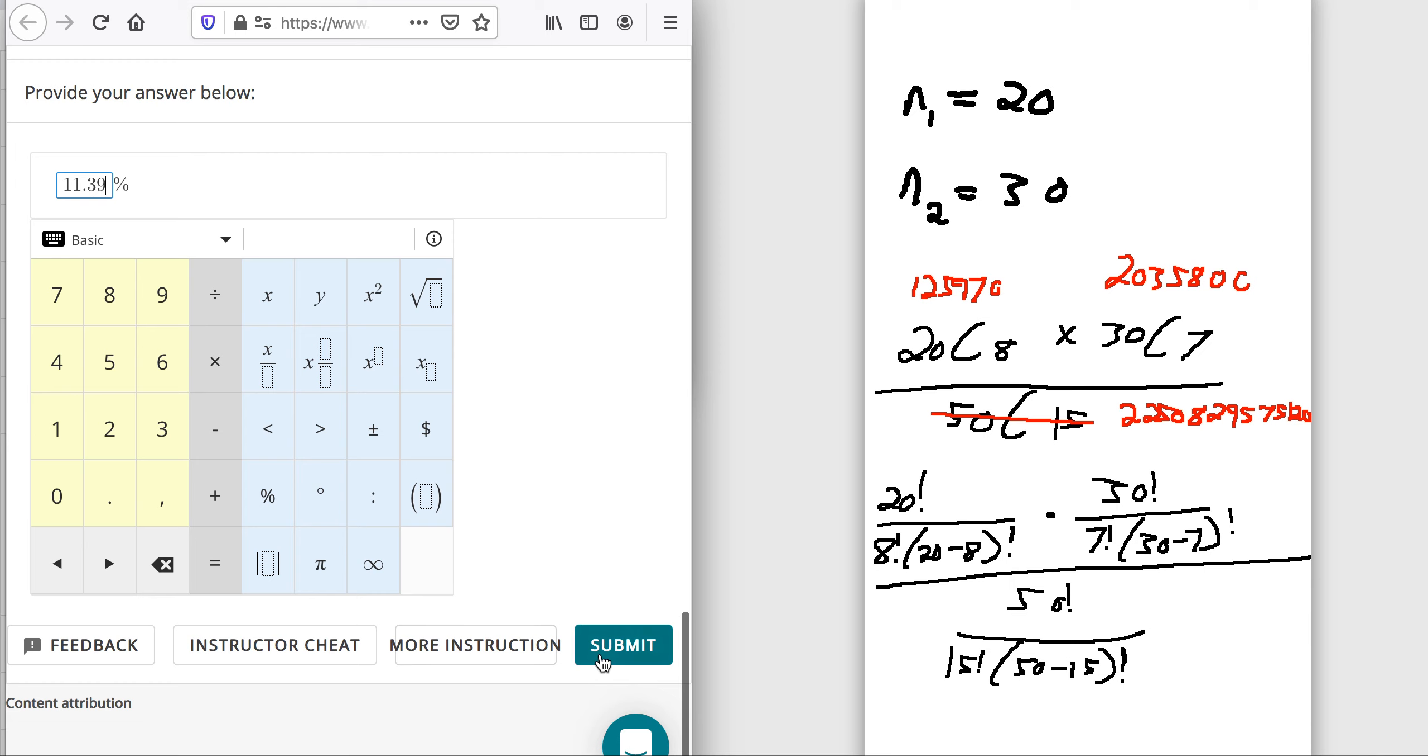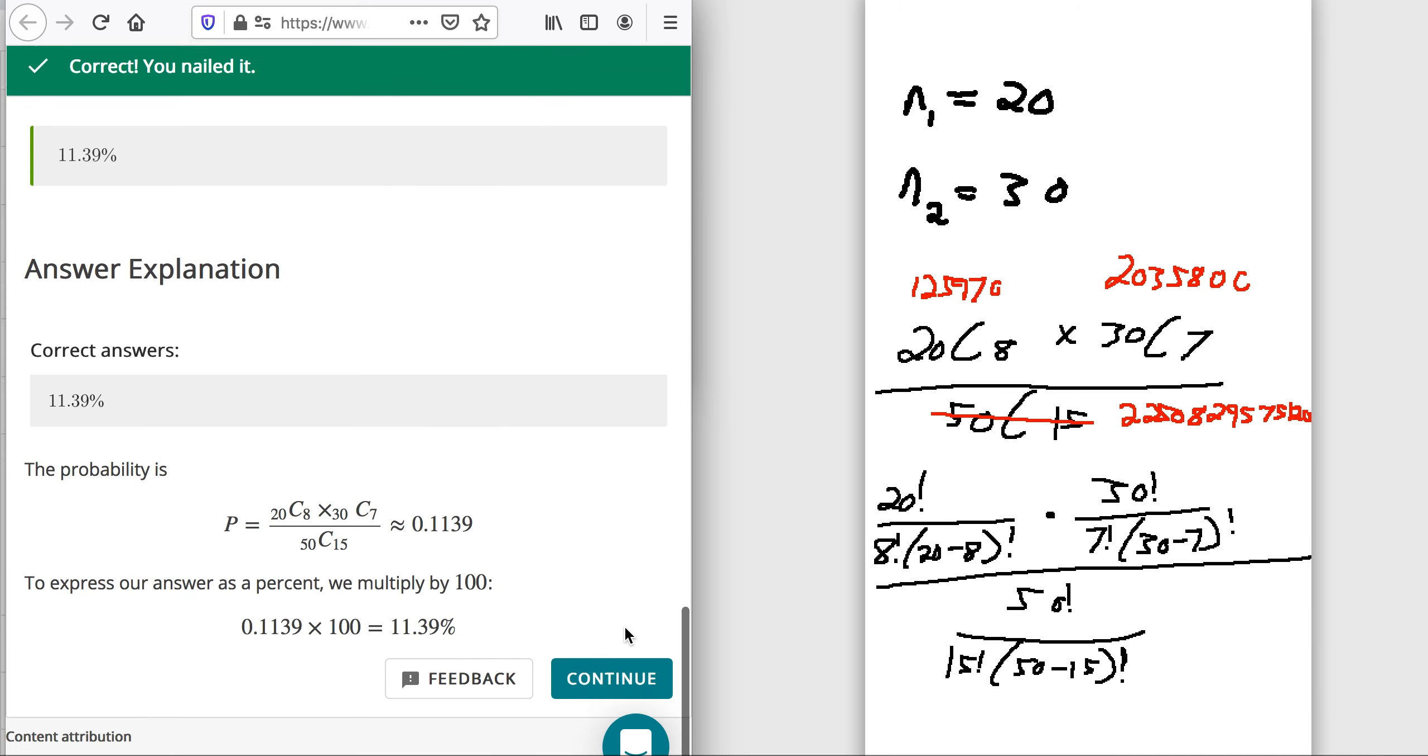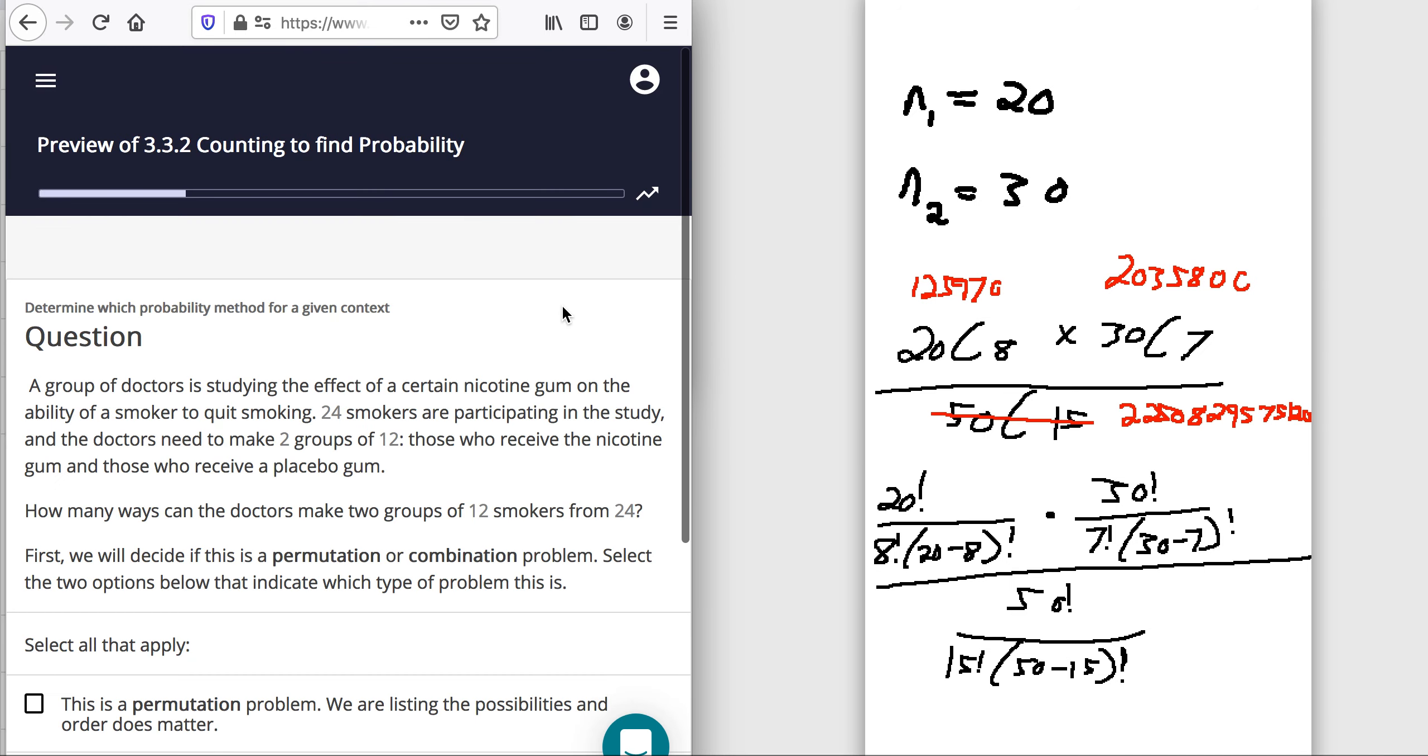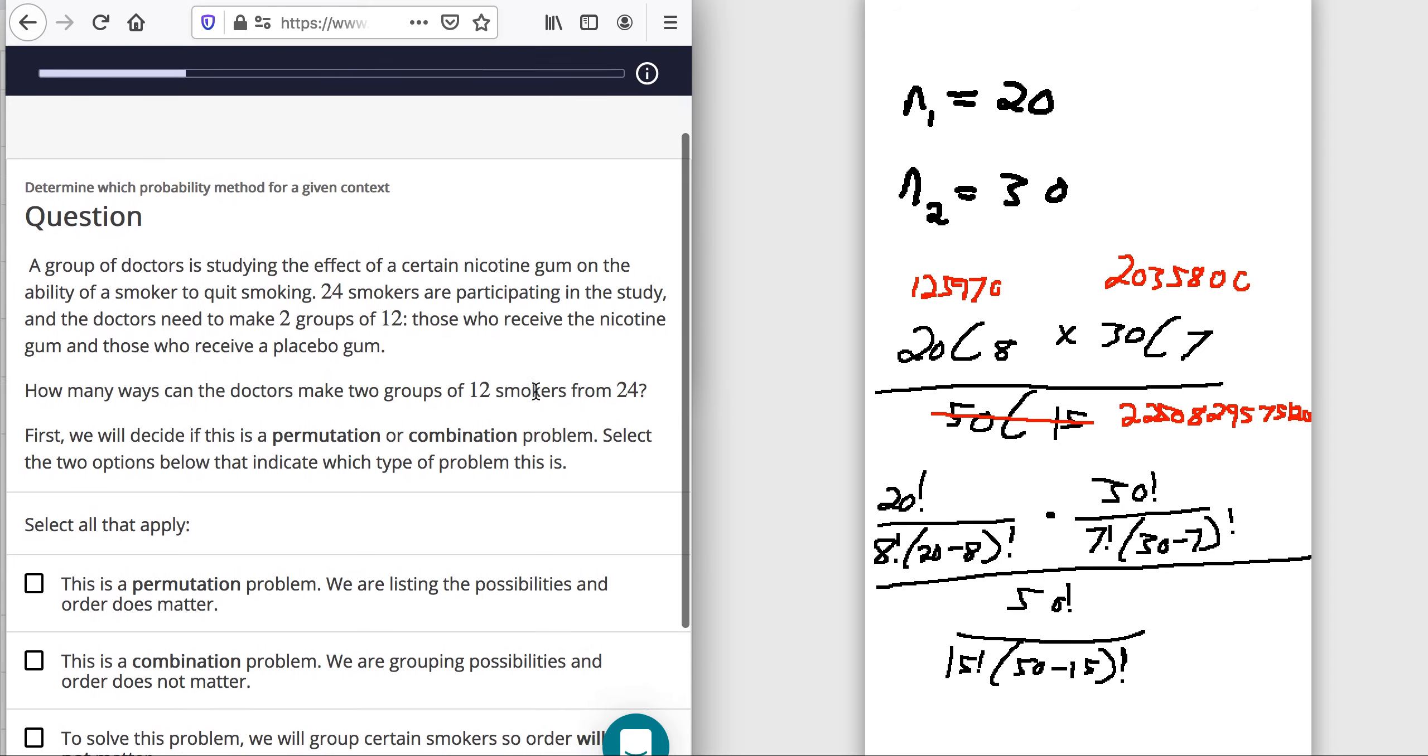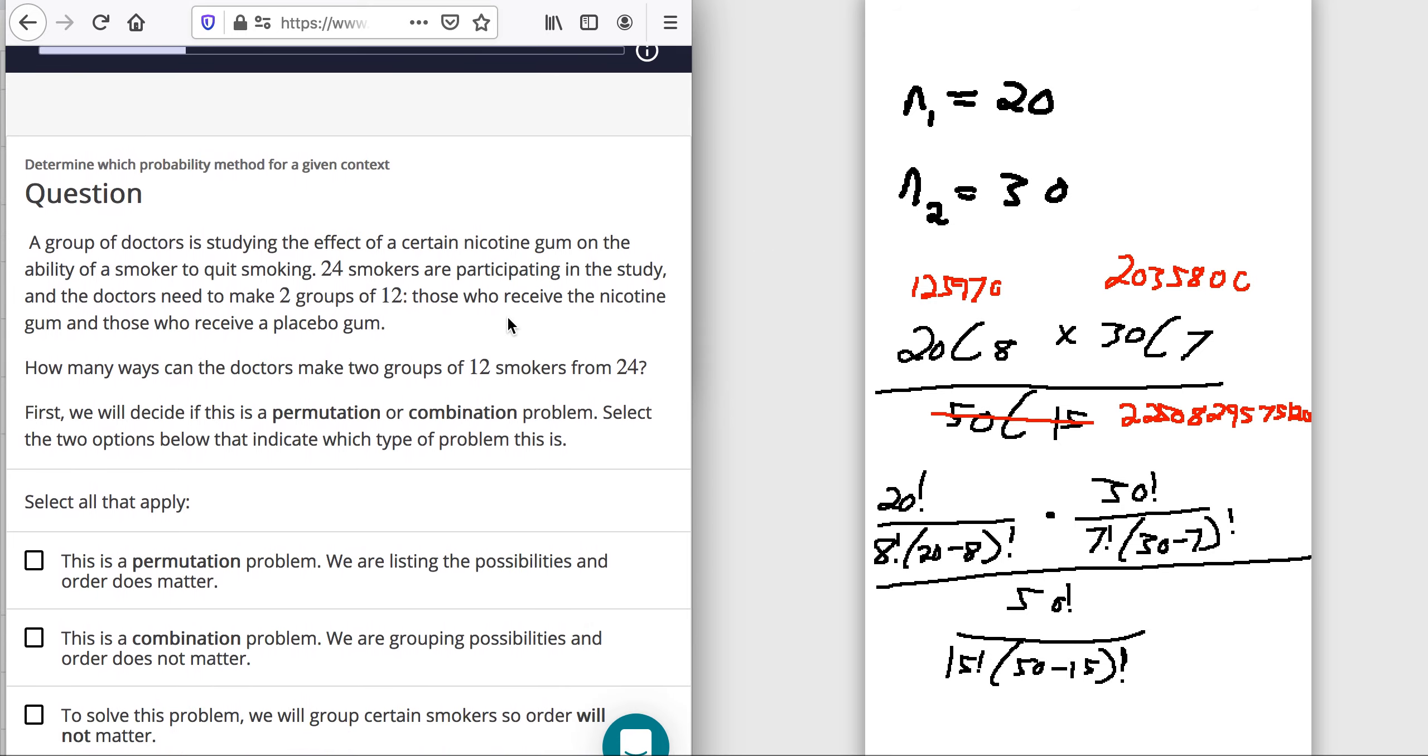Man, I hope I didn't miss anything. Let's see if we can get another problem in here. So, a group of doctors studying the effect of a certain nicotine gum. 24 smokers are participating in the study and doctors need to make two groups of 12. Those who receive nicotine gum and those who receive the placebo gum. So, how many different ways can the doctors make the two groups of 12? So, the question, if it's a permutation or combination, you should be thinking, does the order matter?